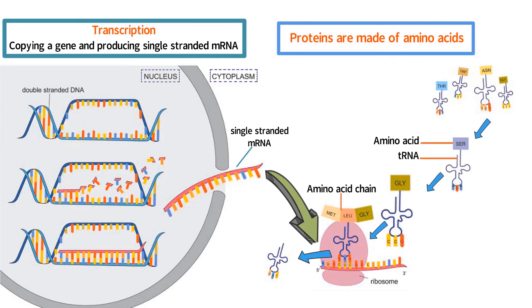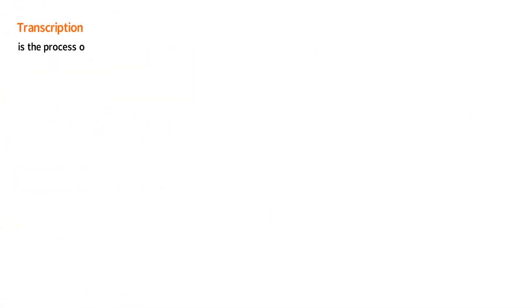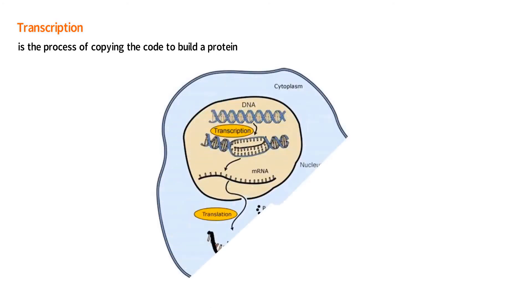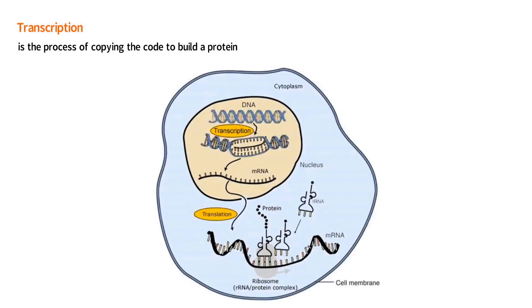To review: transcription is the process of copying the code to build a protein so the code can be present in the cytoplasm, accomplished by producing an mRNA copy of the genes for the protein. Translation is the process of translating the mRNA, making sure the amino acids joining together to build the protein follow the genetic code — specifying which amino acids and in which order the amino acids should join together to build the protein.